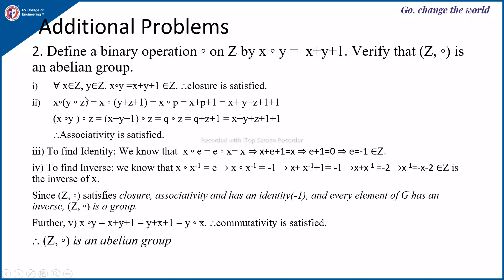For associativity: x∘(y∘z) = x∘(y+z+1). Letting P = y+z+1, we get x∘P = x + P + 1 = x + y + z + 1 + 1. Similarly, (x∘y)∘z: letting Q = x+y+1, we get Q∘z = Q + z + 1 = x + y + 1 + z + 1. Both sides are equal, so associativity is satisfied.